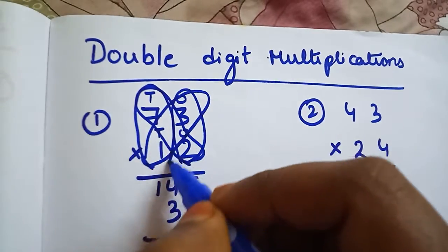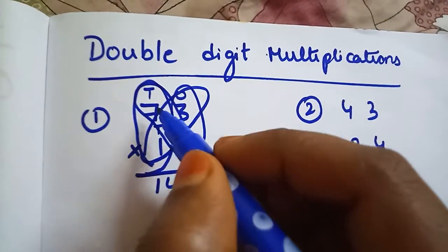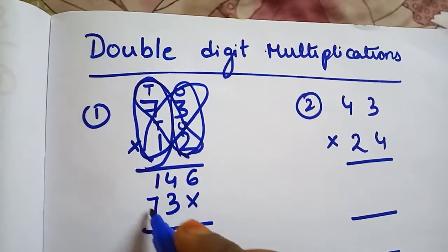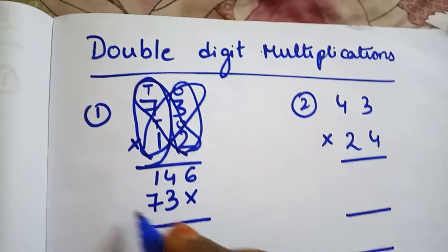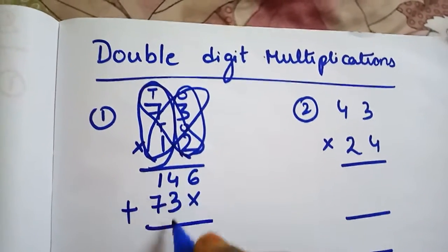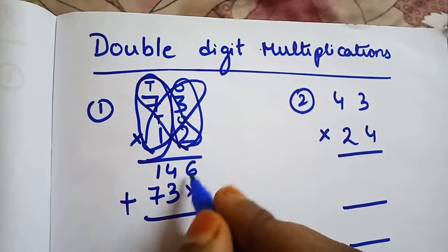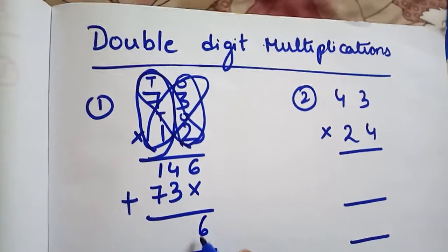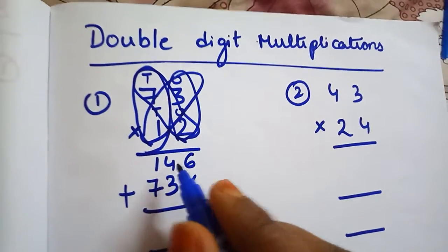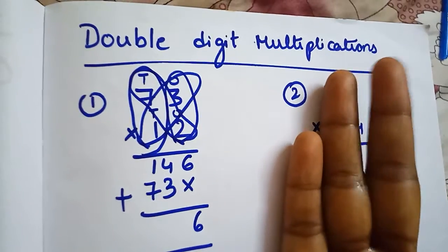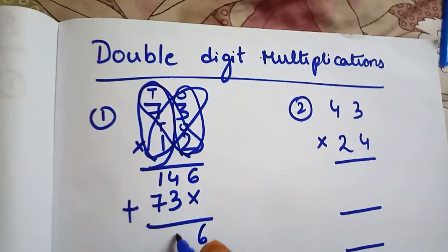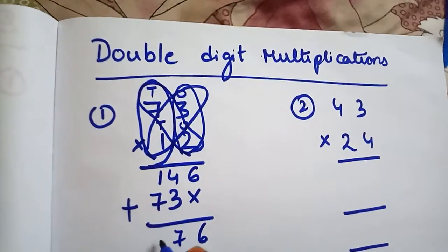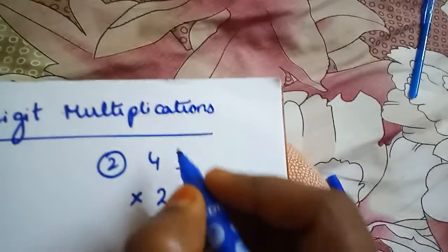Now we have to add both. Here what is there? Only 6 is there, so write here 6. 4 plus 3, 4 keep in mind, take 3 fingers: 4, 5, 6, 7. 7 plus 1 is 8.